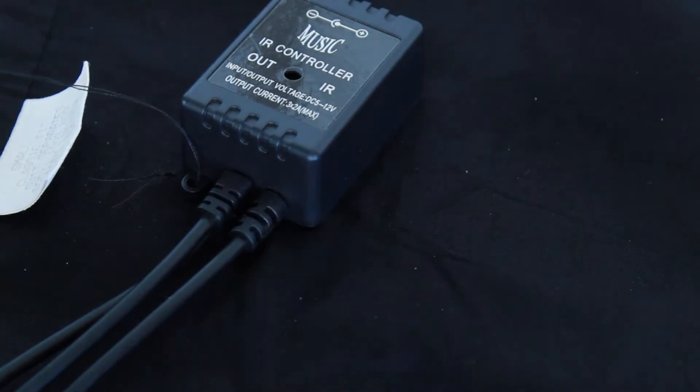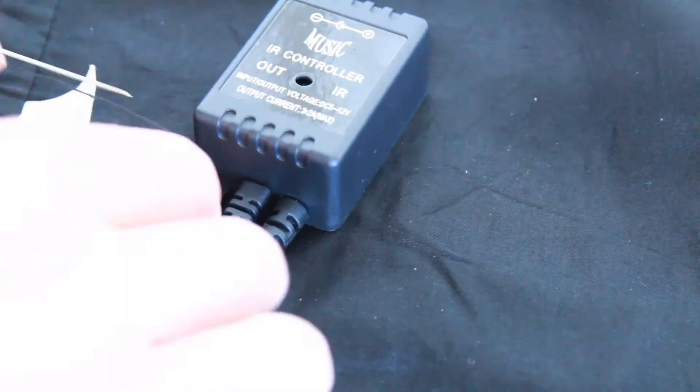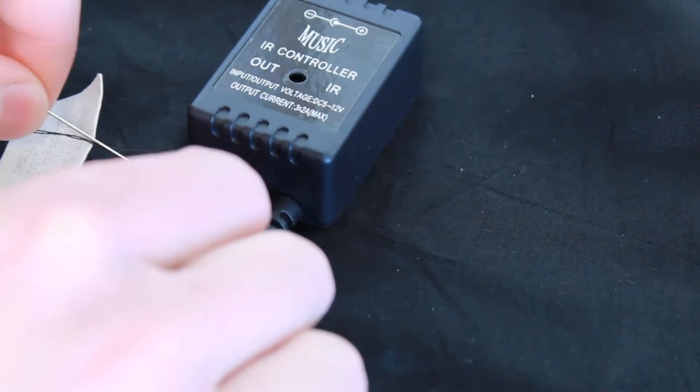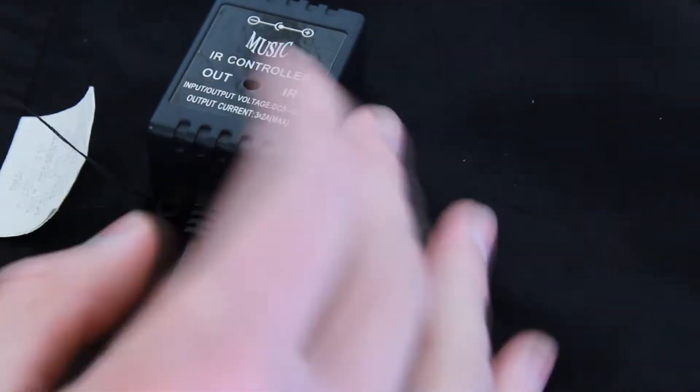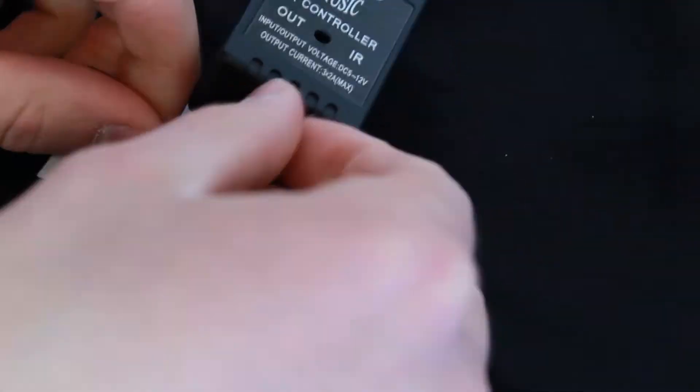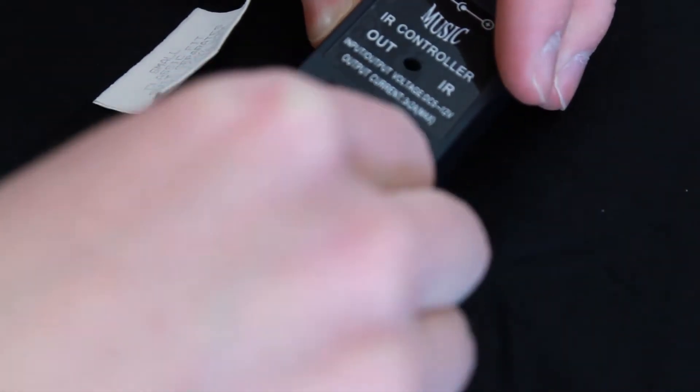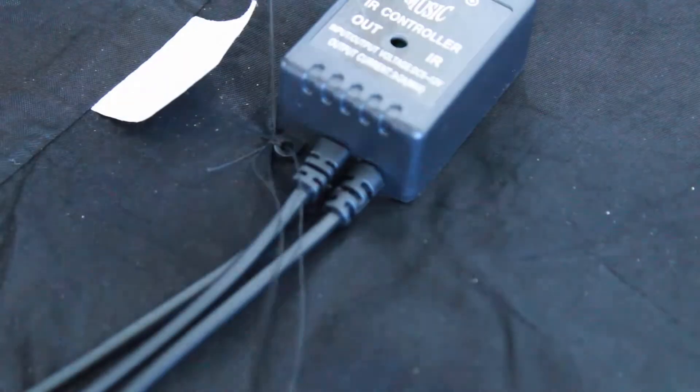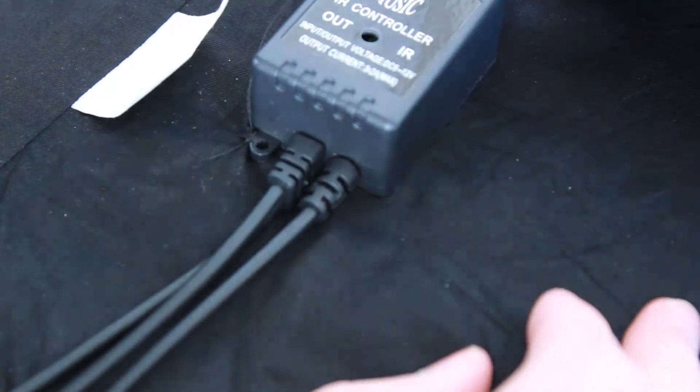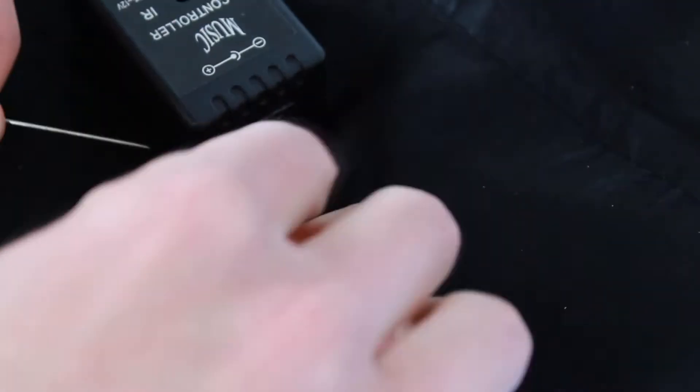To attach the controller, I simply sew it to my vest by routing the thread through the two screw holes. There we go.